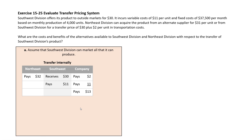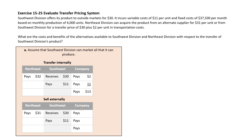Compare that to the scenario where Southwest decides not to do business with Northeast, so Northeast has to buy the part externally. Northeast would pay $31 to an alternate supplier. Southwest can still market its product to someone else, receiving $30 but paying out $11 in variable costs. The net payment to the company is $1 (Northeast's $31 minus Southwest's $30), plus the $11 in variable costs — for an overall cost to the company of $12 when Southwest sells externally.